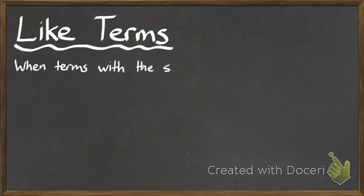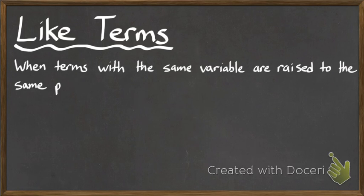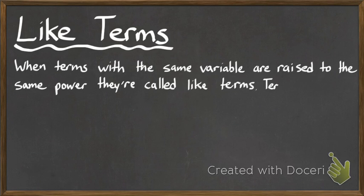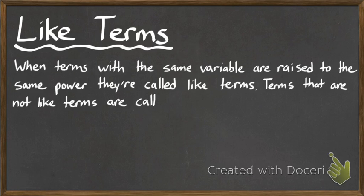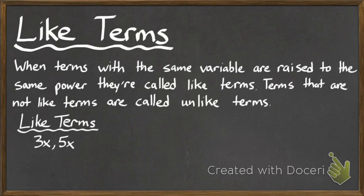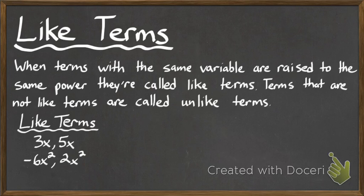We need to know what like terms are. When terms with the same variable are raised to the same power, they're called like terms. Terms that are not like terms are called unlike terms. For example, 3x and 5x are both x terms, so they're like terms — if you add them you get 8x. Negative 6x squared and 2x squared are like terms. And 3 and 8 are both constants, so they can be combined with any operation like addition, subtraction, multiplication, and division.